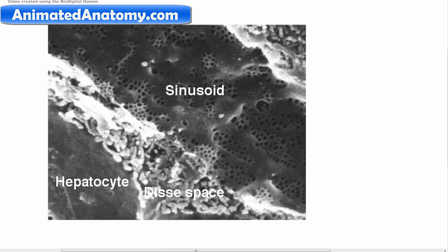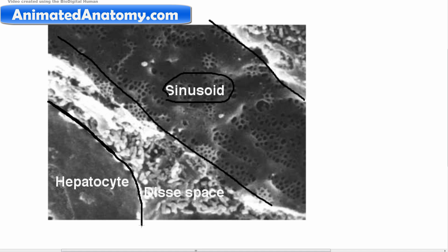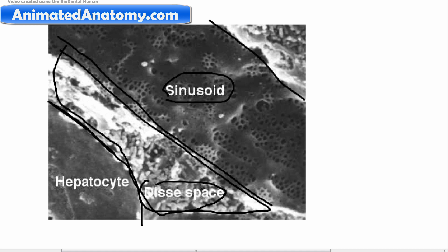Here we see the sinusoid, with blood cells flowing through it. Then you have the hepatocytes and the perisinusoidal space. At my university in Germany and Austria we did not use this space's alternative name — in English it would be pronounced the 'space of Disse' — we just said perisinusoidal space.